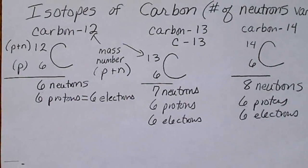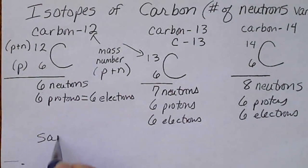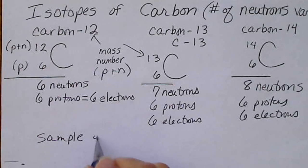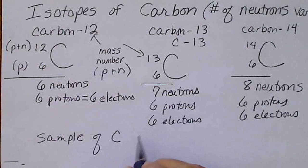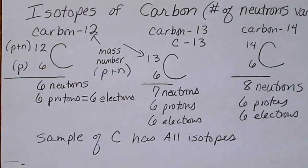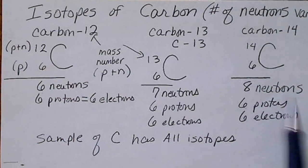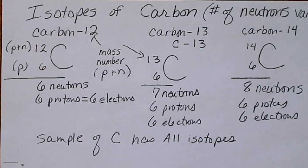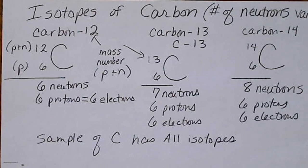If we take a sample of carbon — like a lump of coal — that sample of carbon has all the isotopes in it. So after chapter 4, we aren't going to care about isotopes again, but because in nature atoms of the same type can have different numbers of neutrons, and neutrons are part of what constitutes an atom, we are going to care about the concept of isotopes.